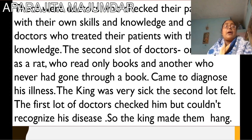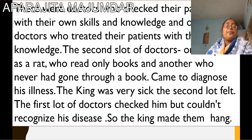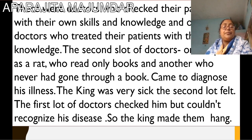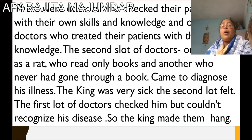An explanation of this part: there were doctors who checked their patients with their skill and knowledge. They told that the king wasn't sick. One doctor came who was very poor and another who had never gone through a book. Now they said that the king was sick. So the king had the first lot of doctors hanged, because they told that he was totally well.